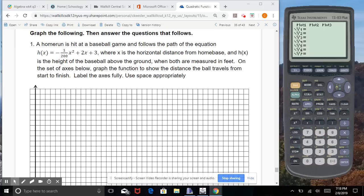A home run is hit at a baseball game and follows the path of the equation h(x) equals negative 1/200 x squared plus 2x plus 3, where x is the horizontal distance from home base and h(x) is the height of the baseball above the ground when both are measured in feet. On the set of axes below, graph the function to show the distance the ball travels from start to finish. Label the axis fully, use space appropriately.